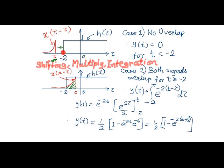Further we start shifting x of t minus tau over h of tau and a time arrives where both signals will overlap when t crosses minus 2.